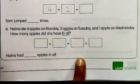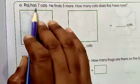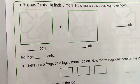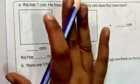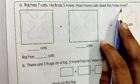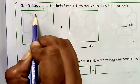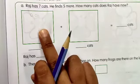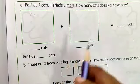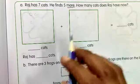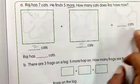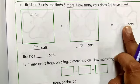Now move on to worksheet number 25. Raj has 7 cats — Raj ke paas kitni cats thi? 7 cats. He found 5 more — usne 5 aur cats dekhi. How many cats does Raj have now? Pehle kitni thi? 7. Aap cat ko yahan circle ke form mein draw karo — pehle 7 cats thi, uske baad 5 more. Toh yahan 5 circles draw karo. You have to add all the cats and write the answer over here.